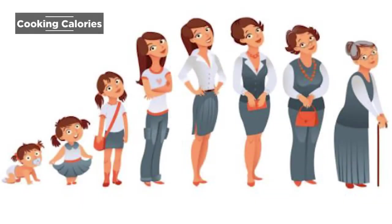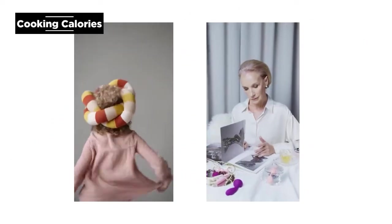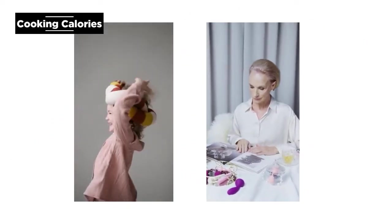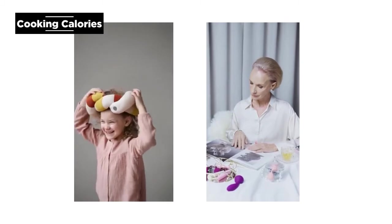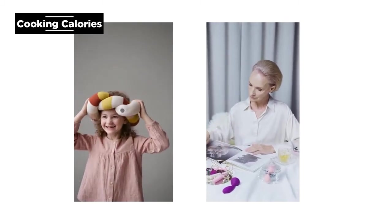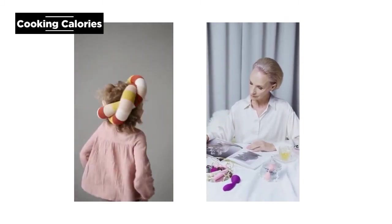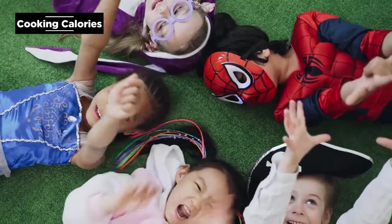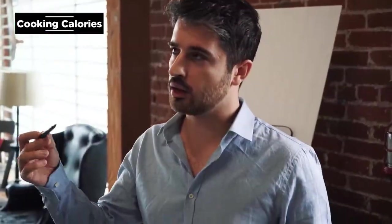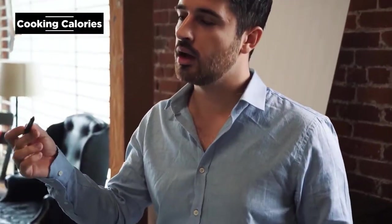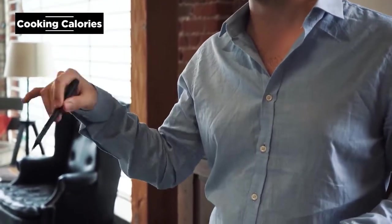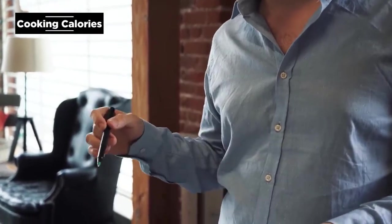Age: The metabolic rate of a young child is almost double that of an adult due to rapid synthesis of cellular materials and growth of the body. Metabolism peaks at 10 years of age and is at a minimum in old age. BMR begins to decrease in early adulthood by about 2% per decade as growth and development cease.